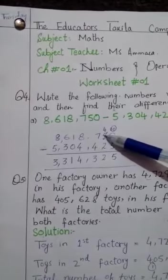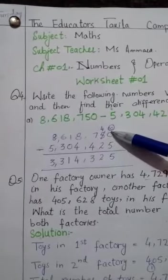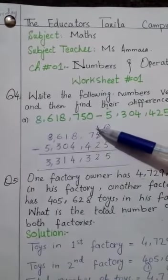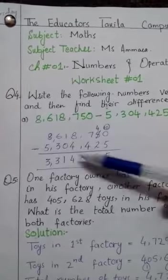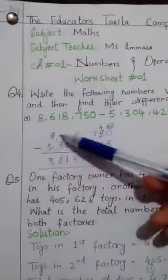4 is left here. 4 minus 2 is 2. 7 minus 4 is 3. 8 minus 4 is 4. 1 minus 0 is 1. 6 minus 3 is 3. 8 minus 5 is 3.